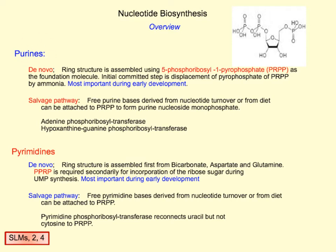In the purine pathway, de novo synthesis is a bit more complicated because you actually have to have phosphoribosyl pyrophosphate (PRPP) to form the ring structure, whereas in pyrimidines, PRPP is only needed to incorporate the ribose. Phosphoribosyl pyrophosphate is this molecule — it's a ribose-phosphate with a pyrophosphate group attached to it. We're going to look at each of these four pathways individually in a moment.